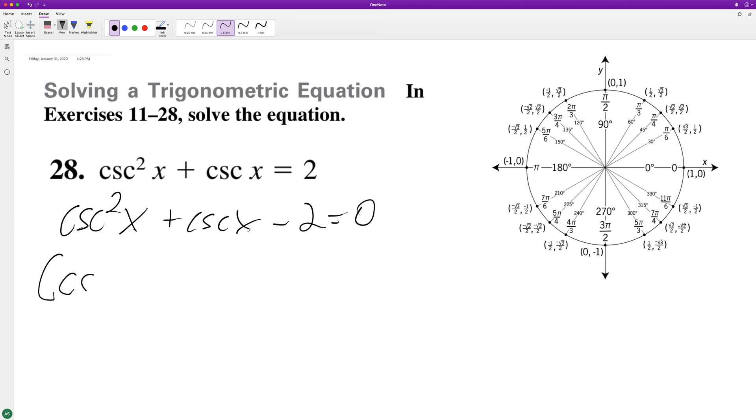So we're going to get cosecant x plus 1 times cosecant x plus 2, and this is going to be minus 1 equals 0.